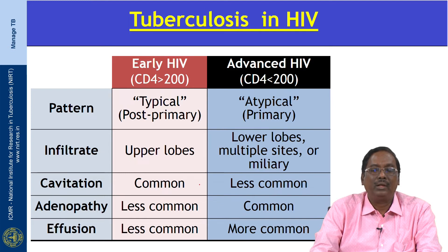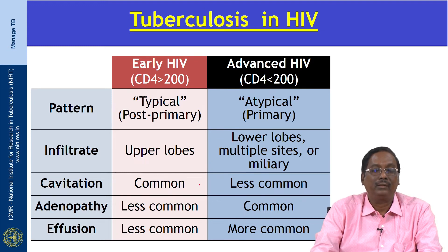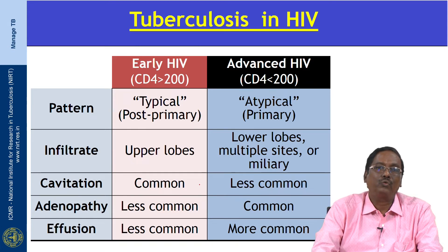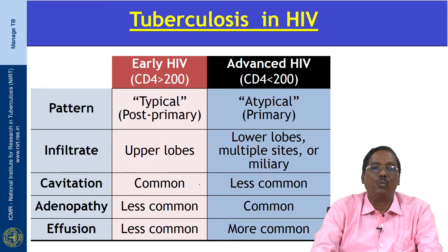In patients with early HIV where CD4 count is more than 200, the radiological pattern usually shows a typical post-primary pattern. The infiltrates are usually in the upper lobe, apical and posterior segment. Cavitation is more common, and adenopathy and effusion are less common.